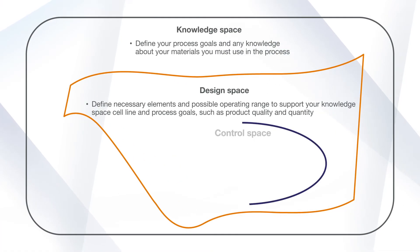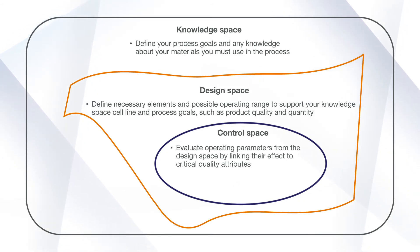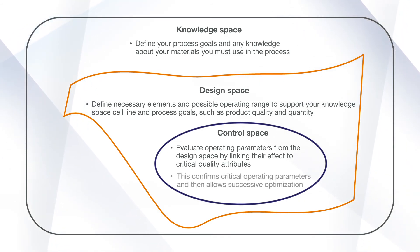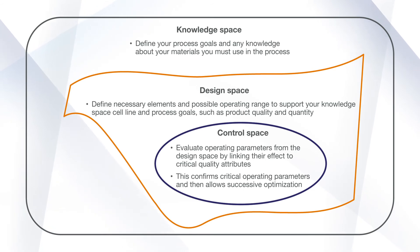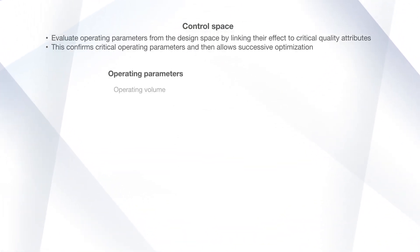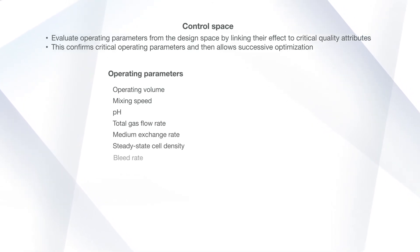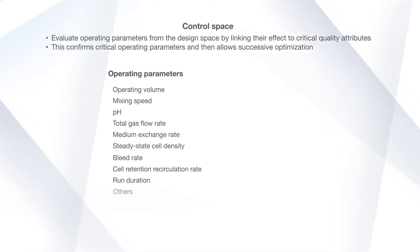For the control space, we will evaluate operating parameters from the design space by linking their effect to critical quality attributes. This confirms critical operating parameters and then allows successive optimization. Operating parameters may include direct items such as pH and steady state cell density, scaling items such as operating volume and mixing speed, or various other parameters.